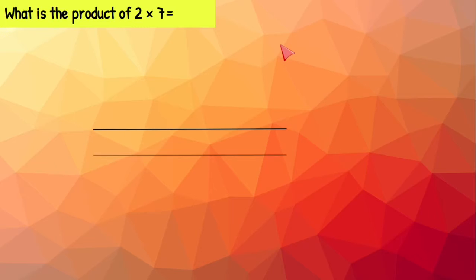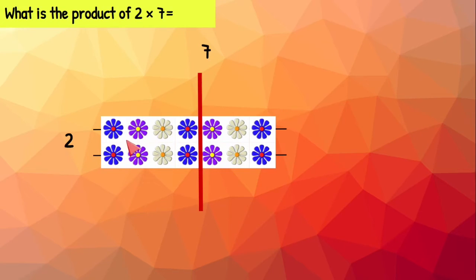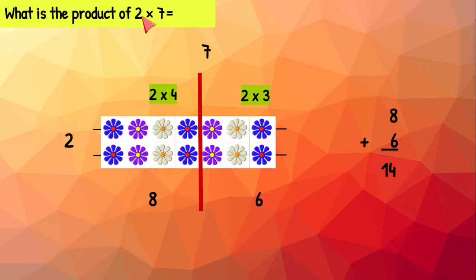What is the product of two times seven? We need two rows with seven flowers on each row. Now we're going to cut the array into two smaller arrays. On our first array we have two rows with four flowers on each row, so we will label that two times four. We know two times four is eight. Over here on this side we have two rows of three flowers on each row, which is two times three. Two times three equals six. Let's put the eight and the six together, which gives us 14. So two times seven equals 14.